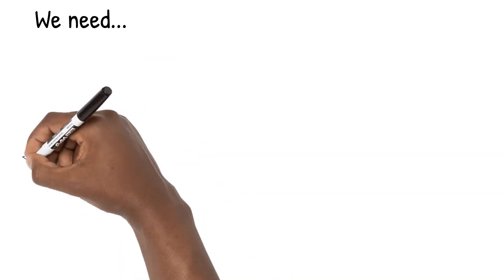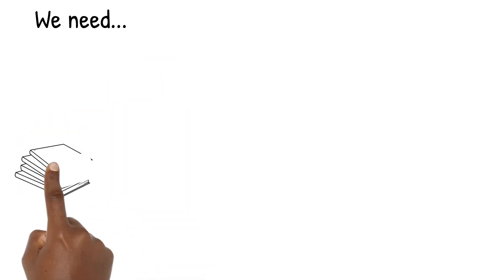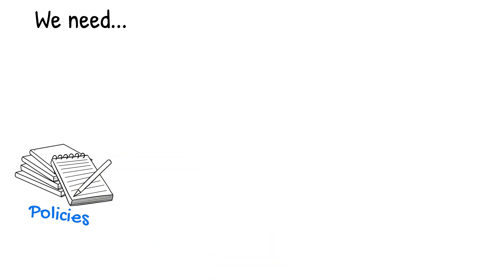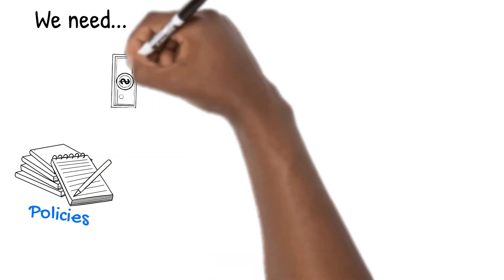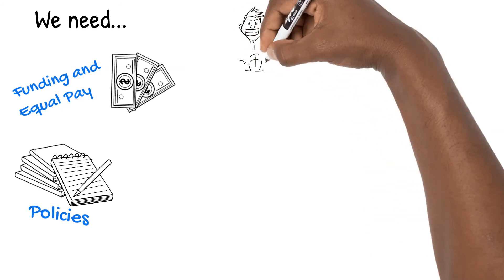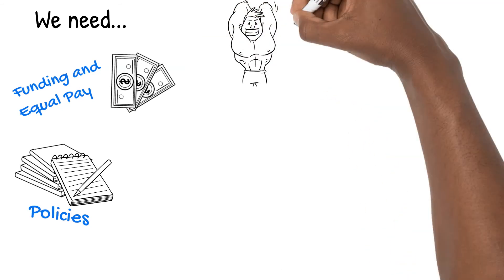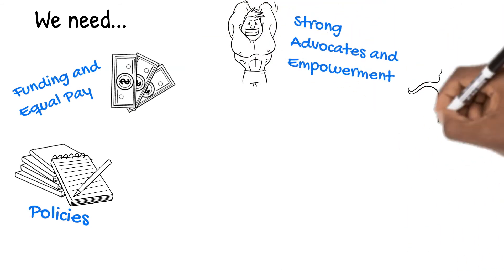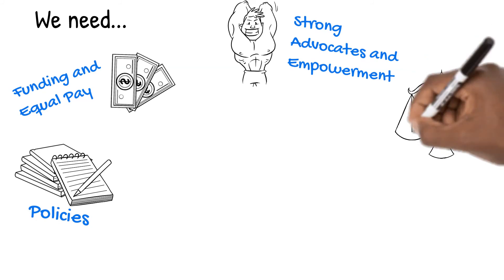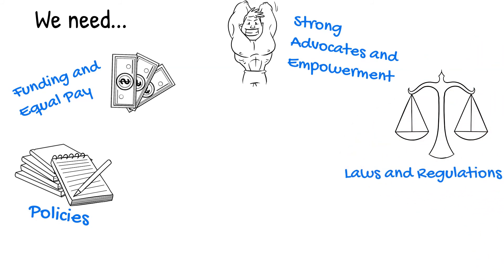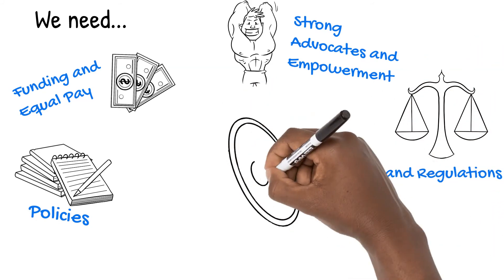Images of books, money, a bodybuilder, a scale, and a megaphone appear. We need policies, funding and equal pay, strong advocates, and empowerment, laws and regulations — to be included.